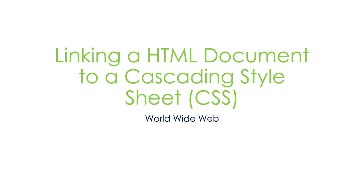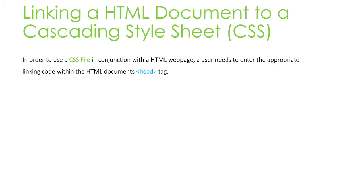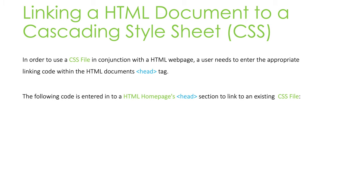Linking an HTML document to a cascading stylesheet. In order to use a CSS file in conjunction with an HTML web page, a user needs to enter the appropriate linking code within the HTML document's head tag. So here is how we're going to actually do it — I'm going to show you the code for my HTML homepage's specific head tag.